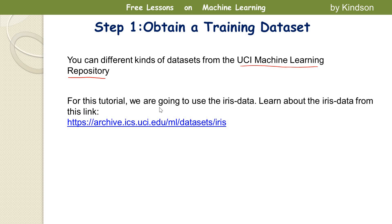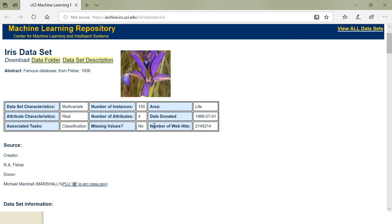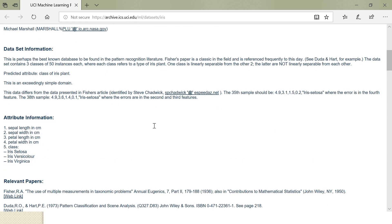So for this tutorial we will use the iris data. This iris data, you can learn about it from this link. I'm not going to spend time on it but you can learn about the iris data. This is the attribute information and the class information.